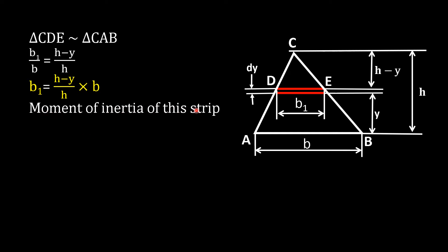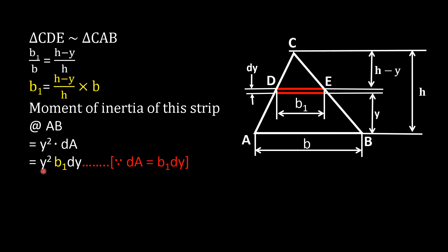So b₁ = b(h−y)/h. The moment of inertia of this strip about side AB is y² dA, where dA = b₁ dy. Substituting the value of b₁, we write y² times [b(h−y)/h] times dy.